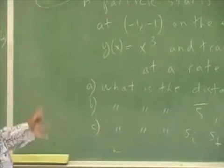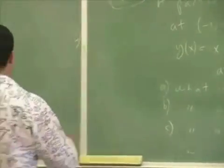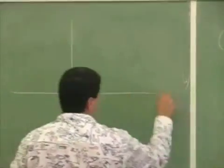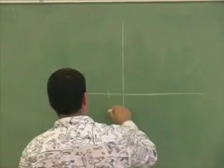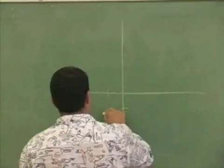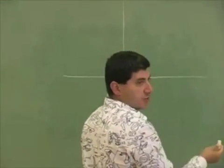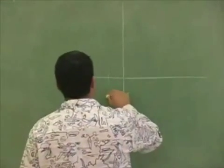Let's draw a rough idea of what's going on here so we can see the particle starting at (-1, -1). So this is the graph of y = x³, right? The graph goes something like this.